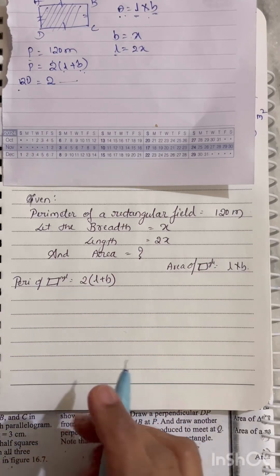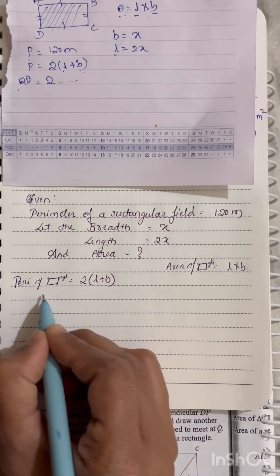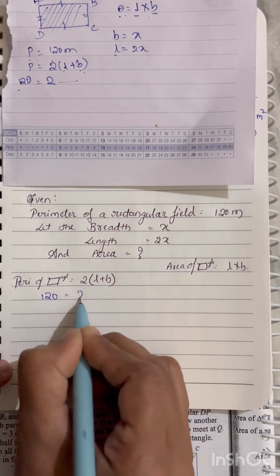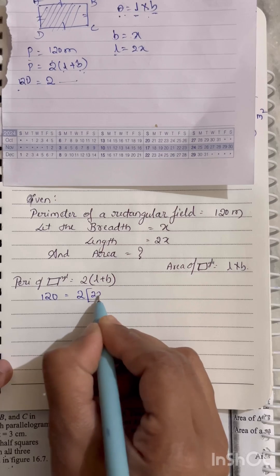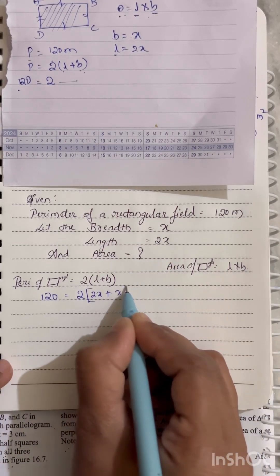Since we know the perimeter of the rectangle formula, perimeter equals 120 equals 2 in the bracket. L we have considered 2X plus breadth we have considered as X.